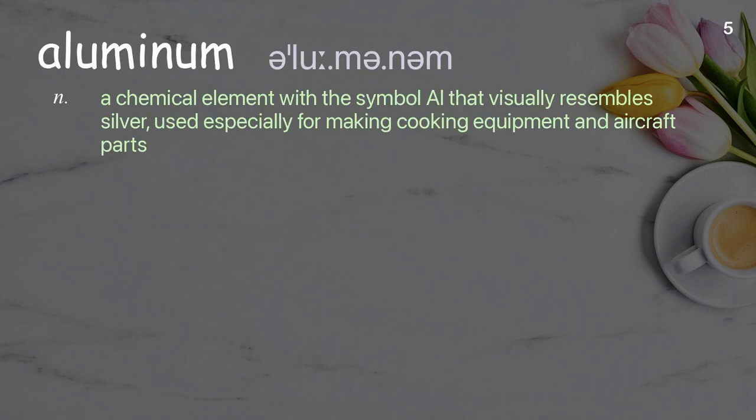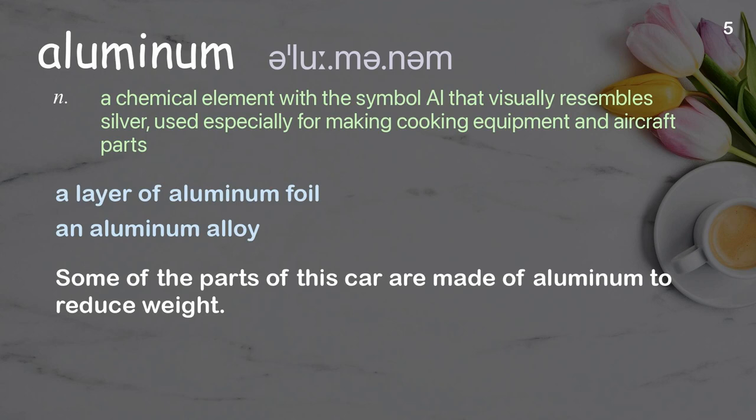Aluminum: a chemical element with the symbol Al that visually resembles silver, used especially for making cooking equipment and aircraft parts. Examples: a layer of aluminum foil, aluminum alloy. Some of the parts of this car are made of aluminum to reduce weight.